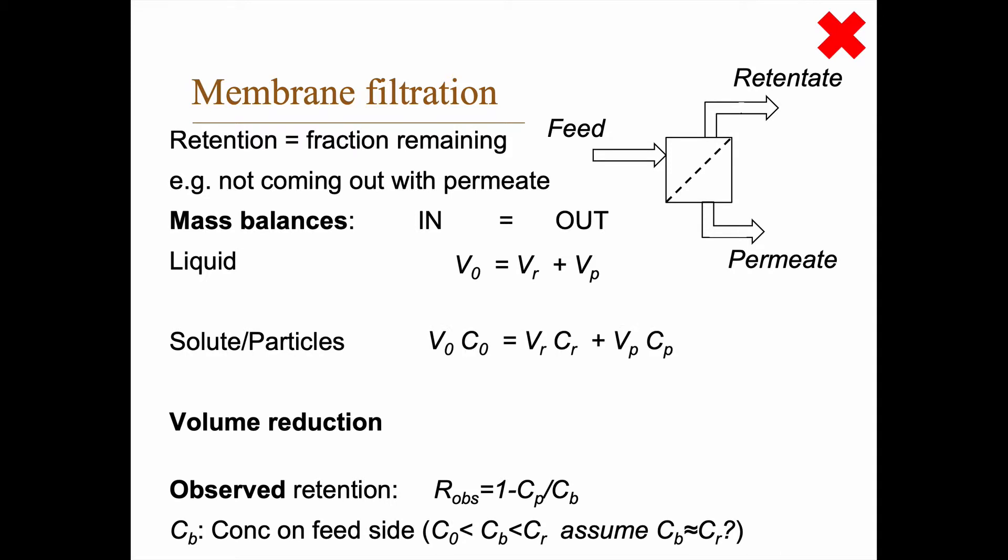For the particles, you have to take into account the concentration in all these volumes. So V₀ has a concentration of C₀, and the retentate has a concentration Cr, and the permeate has a concentration Cp.